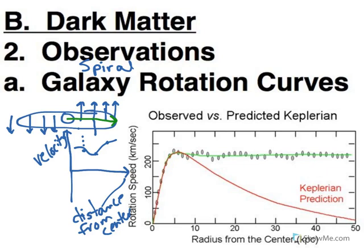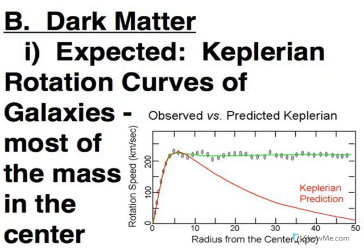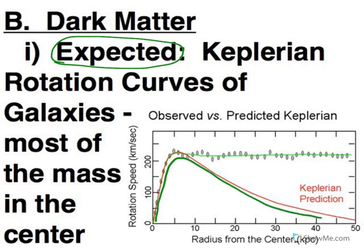Well, what we expected and what we got were two different things. What we expected is called a Keplerian rotation curve. And that's this red line right here, which I'm now tracing with a green line. So that's our Keplerian prediction.